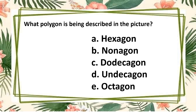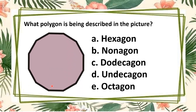For the fourth picture, let us count the number of sides of this polygon: one, two, three, four, five, six, seven, eight, nine, ten, eleven, twelve. This polygon has twelve sides. The correct answer is letter C, dodecagon.